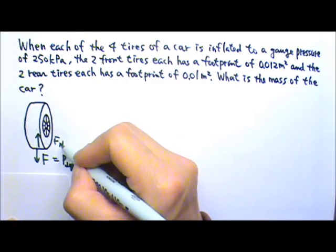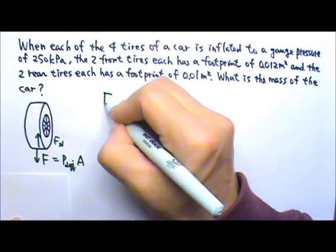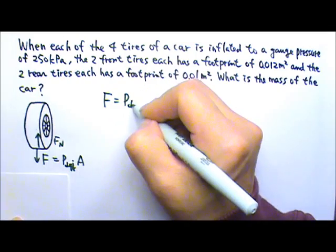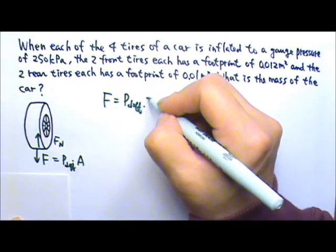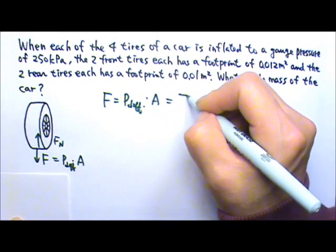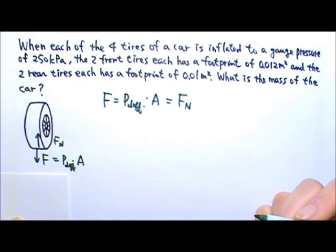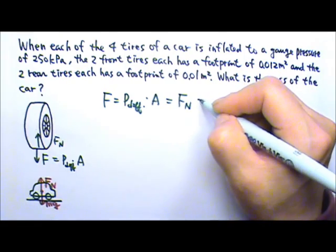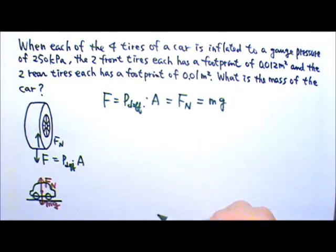So these two forces are equal. The force from the pressure difference, pressure difference times the area, equals to this normal force. We also know that the normal force from the ground on a car equals to the mg of the car. So this equals to the mg of the car.